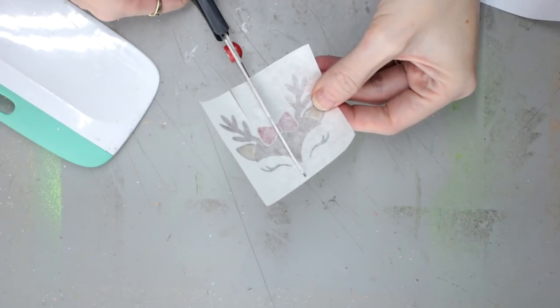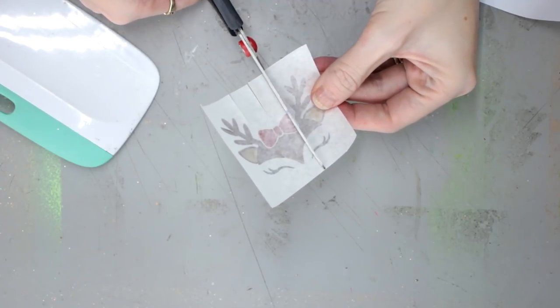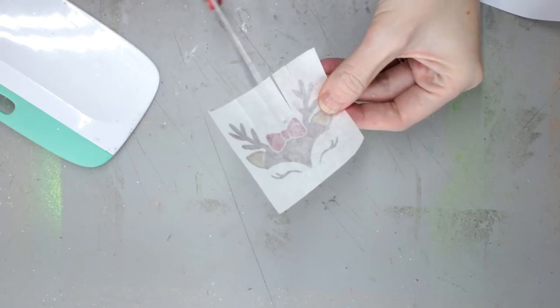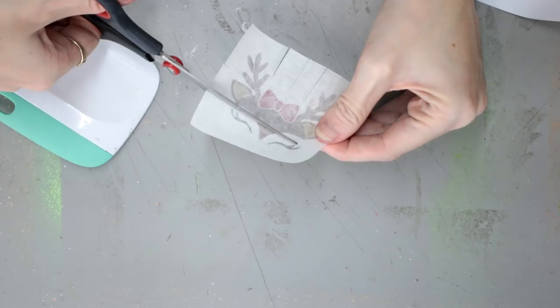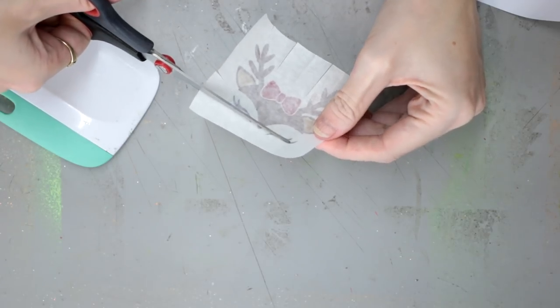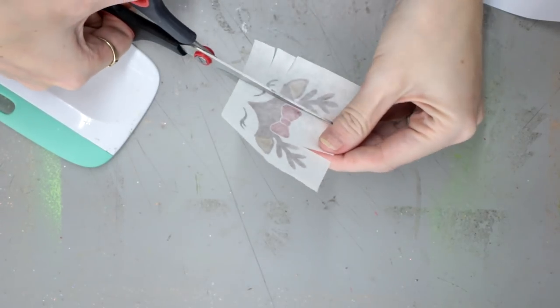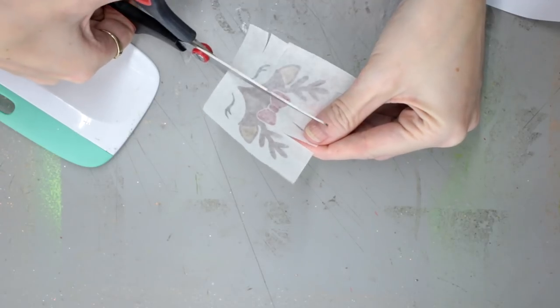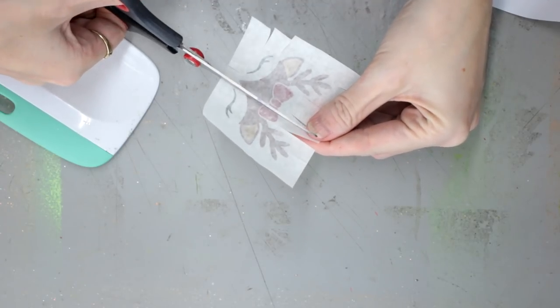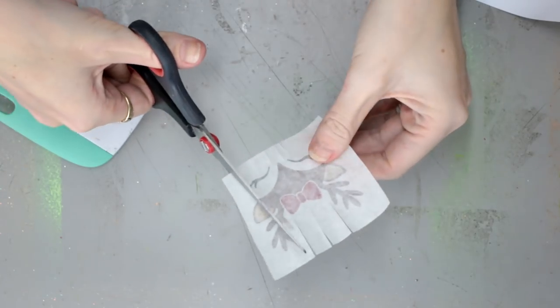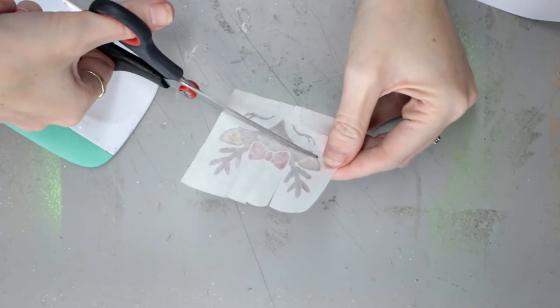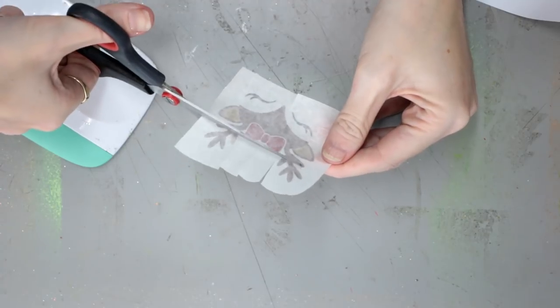So this is the method that I always use on a curved surface. You can see I'm coming in and using my scissors to snip lines all the way around my image into my transfer tape. And I use this method for any curved surface—whether it be balloons, baubles, glass, vases, whatever it may be. If it's curved, this is the technique that I use.